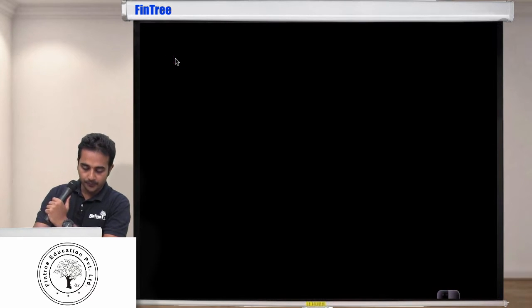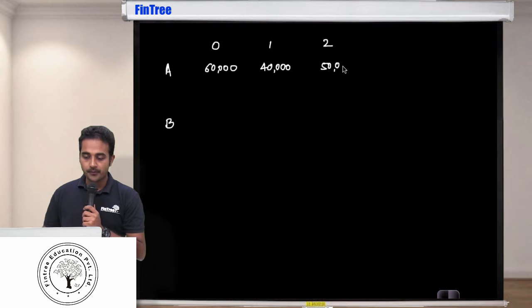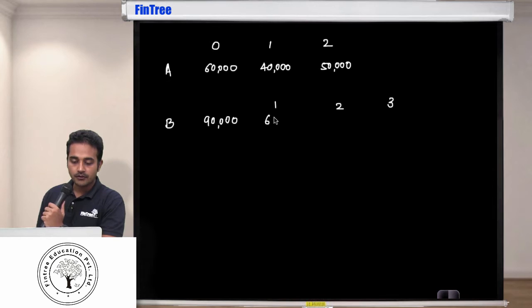Let's say we are looking at project A and project B. Project A at time zero requires you to invest 60,000 and it has a life of two years. First year it will get you a cash flow of 40,000, second year 50,000. Project B requires you to invest 90,000 and the life is three years. First year 60,000, second year 50,000, third year 40,000.